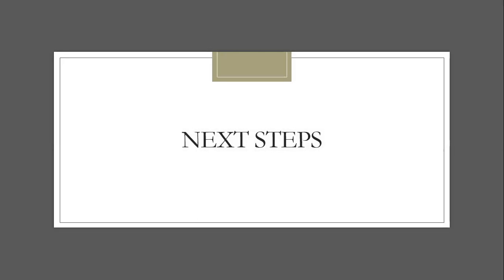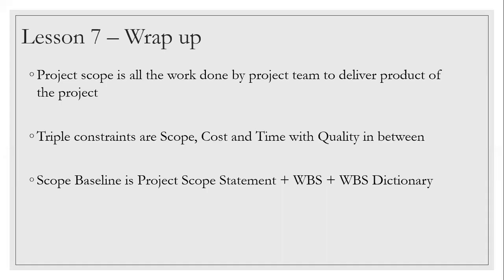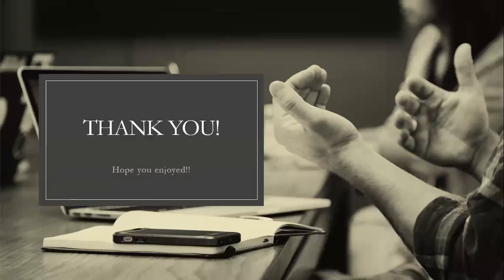With that, we came to the end of lesson seven. A quick wrap-up: project scope is all work done by the project team to deliver the product of the project. Triple constraints are scope, time, and cost with quality in between — maintain an equilateral triangle. The scope baseline is your project scope statement plus WBS plus WBS dictionary. In lesson eight, we're going to talk about WBS in detail with a hands-on exercise. Thanks and cheers.